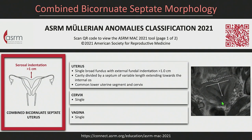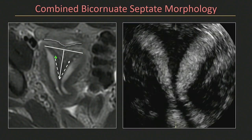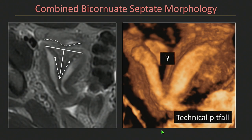Here's an example where it's hard to see the fundus perfectly, but maybe a little indentation. Here's the interstitial line, the depth, and the angle — this looks at least septate, maybe with a little indentation at the top. I wanted to bring up this case because if you change the gain on the 3Ds, you can actually eliminate the myometrium and just leave yourself with the endometrium, so it ends up looking more like a didelphys or bicornuate uterus, even though this would be closer to septate morphology. This is a technical pitfall.